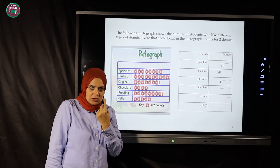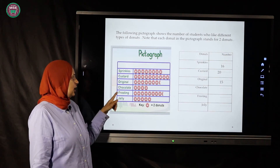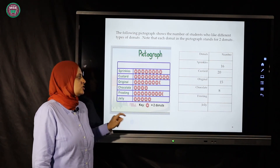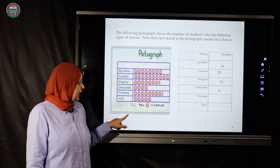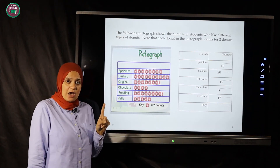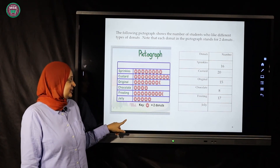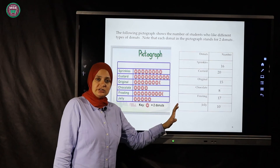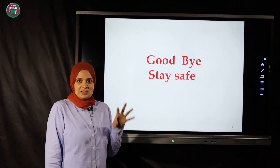For the original flavor, counting by twos: two, four, six, eight, ten, twelve, fourteen — then there is a half donut, which counts as one, so fifteen. For chocolate: two, four, six, eight — eight donuts. For frosting: two, four, six, eight, ten, twelve, fourteen, fifteen, sixteen — then a half donut makes seventeen. For jelly: two, four, six, eight, ten — ten donuts. All the data is now organized in a small table.